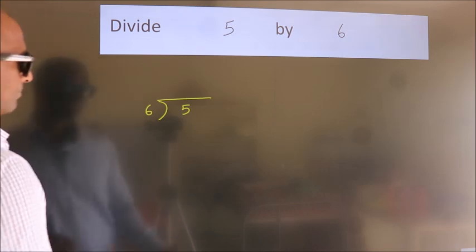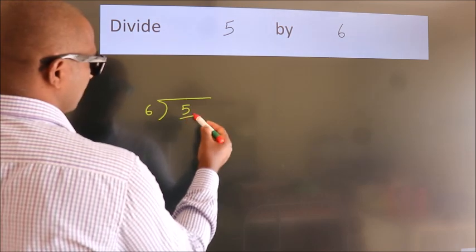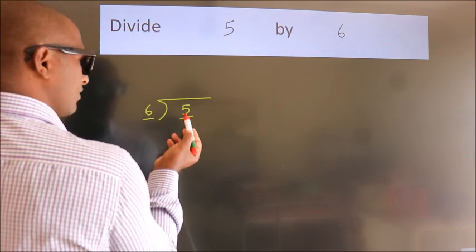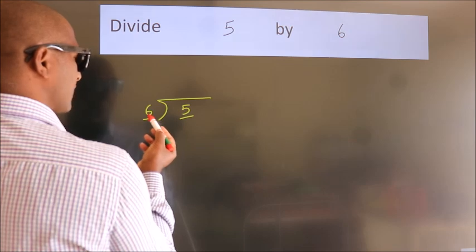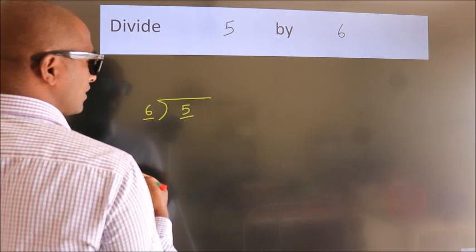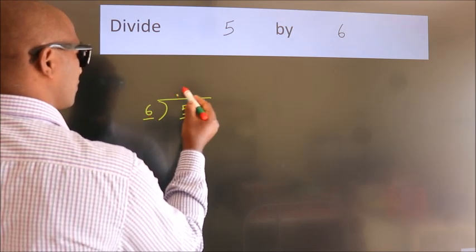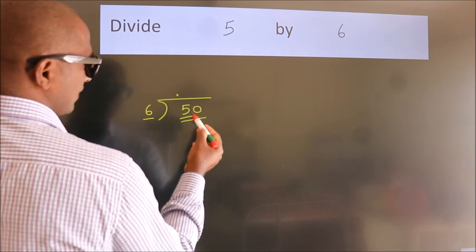Next. Here we have 5, here 6. 5 is smaller than 6. So what we should do is put a dot and take 0. So 50.